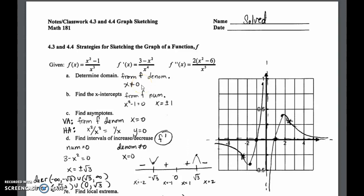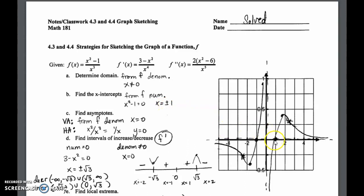For part (b), the x-intercepts come from the numerator of the function, so we have x² − 1, which gives us the two x-intercepts: plus or minus one. You can see they are plotted here — there's positive one and negative one for the zeros.